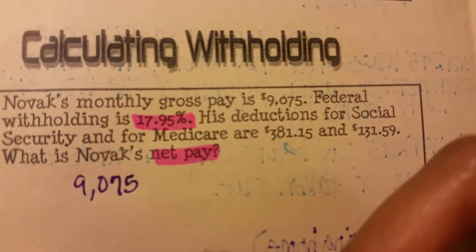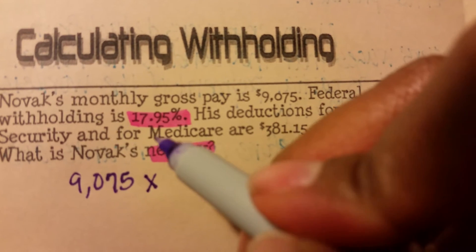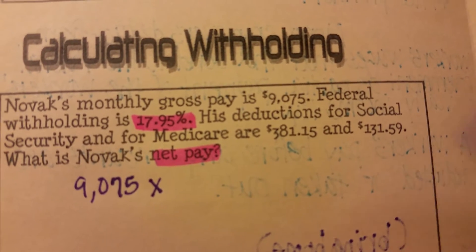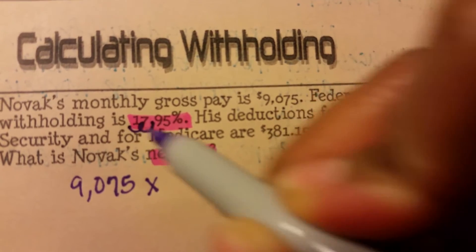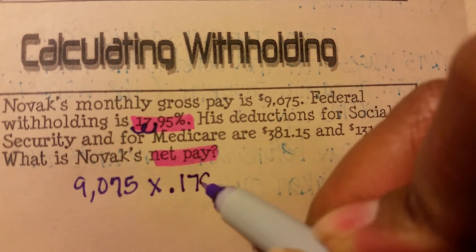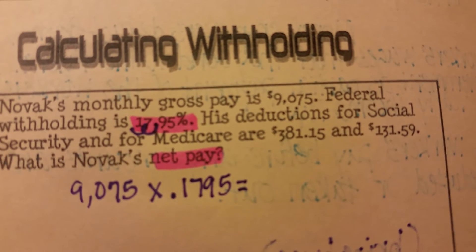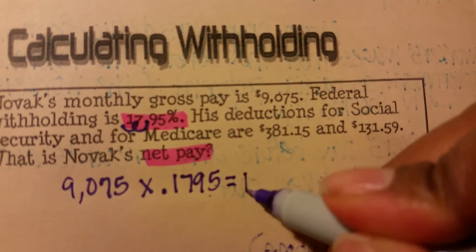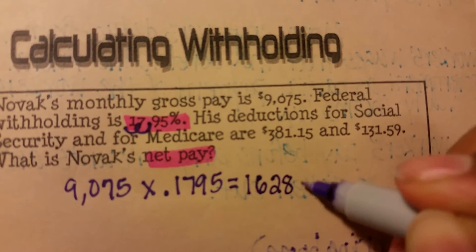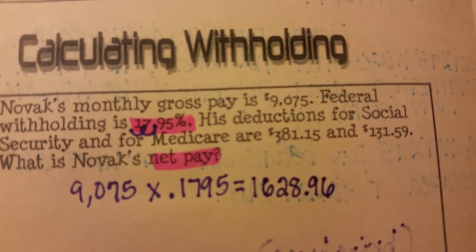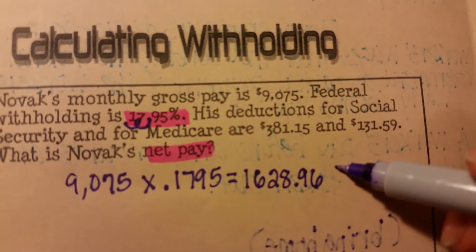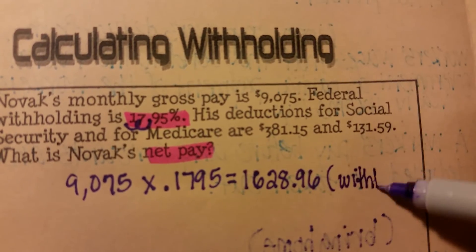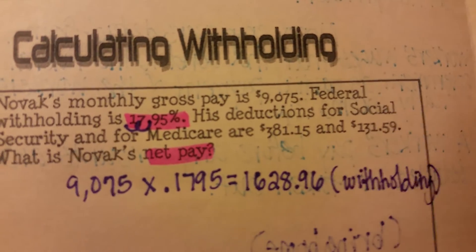First, we take his gross pay and figure out what his withholding is. We take $9,075 and multiply it by the percent. To turn 17.95% into a decimal, move the decimal two places to get 0.1795. Multiply that out and we get $1,628.96. This is how much the federal tax withholding is.